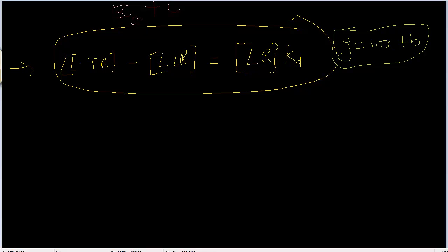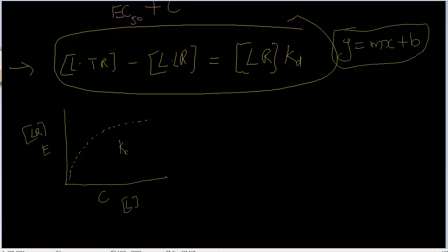Because if you plot effect versus concentration — that is LR versus L, the ligand — we have data something like this, a curved plot. Using this plot, it is difficult for us to find KD or EC50 — they're one and the same — or Emax. It's not easy; we cannot find them out accurately. So what we do is linearize this equation by dividing LR by L.